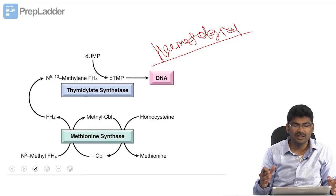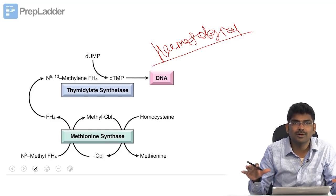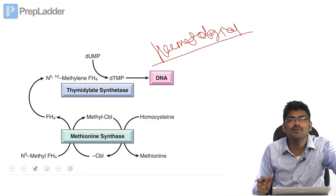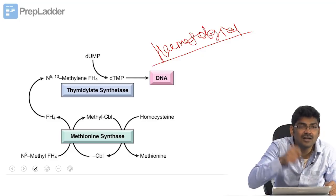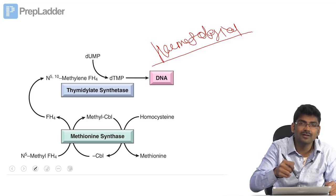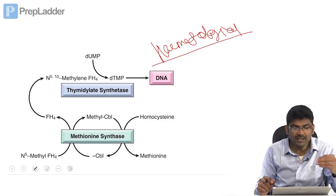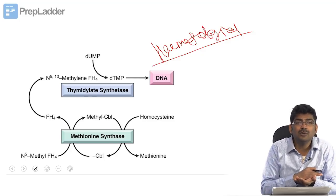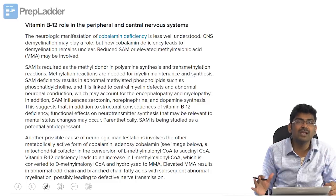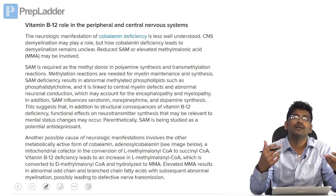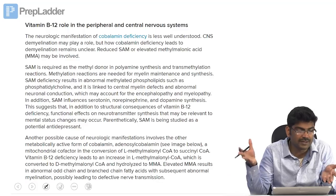If you give folate to a person with B12 deficiency, the anemia will be cured — but that does not mean you should only give folate. The folate deficiency here is functional; the actual cause is B12 deficiency, so you must give B12. B12 deficiency also leads to neurological problems. If you just give folate, the hematological symptoms will improve but neurological symptoms will persist and ultimately worsen.